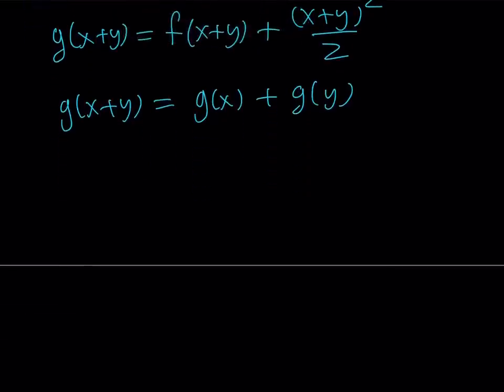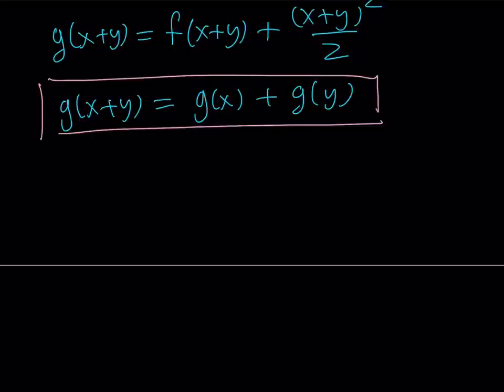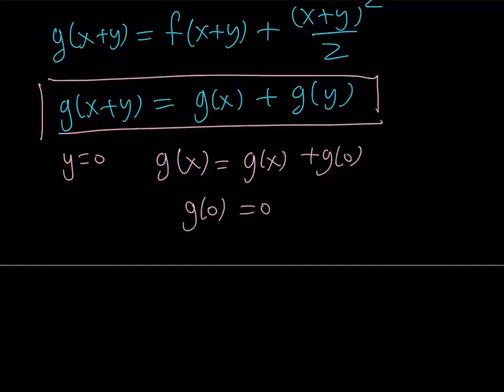So I'm going to tell you that a function that is additive like this, first of all, I want you to observe a couple things. For example, if you replace y with 0, you get g(x) = g(x) + g(0). So from here, you get g(0) = 0. That's one of the observations I want you to make.